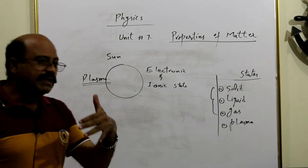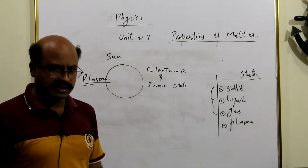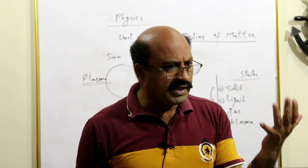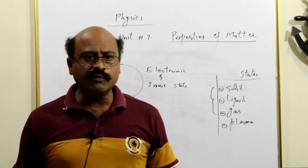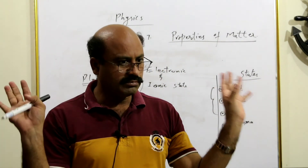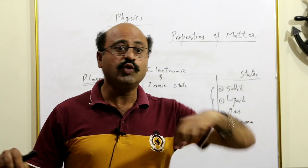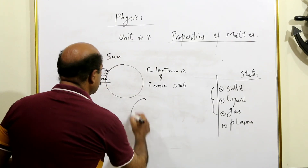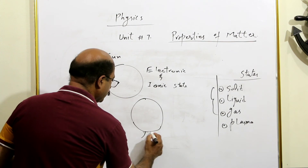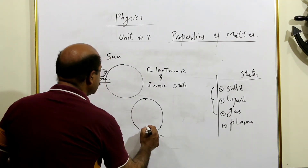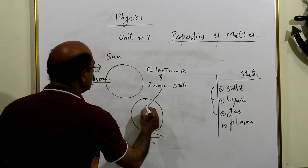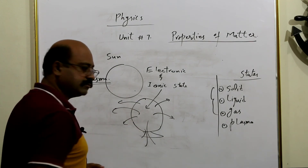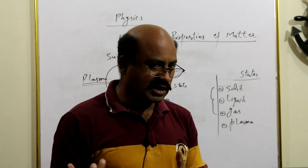Plasma kab banta hai? Yahan bhi bana sakte hain. Aap musical concert ya TV mein dekhte hain jahan rock band dance kar raha hota hai — wahan mein mukhtalif qisam ki lights — DJ lights — dal rahe hote hain. Woh original DJ lights hain jo plasmic lights hoti hain. Woh jo bulb hote hain un ke andar unhon ne gas bhari hoti hai. Jab us gas ke andar se current guzaarte hain toh woh gas apni electronic aur ionic state mein convert ho ke mukhtalif colors ki roshniyan daalti hain.